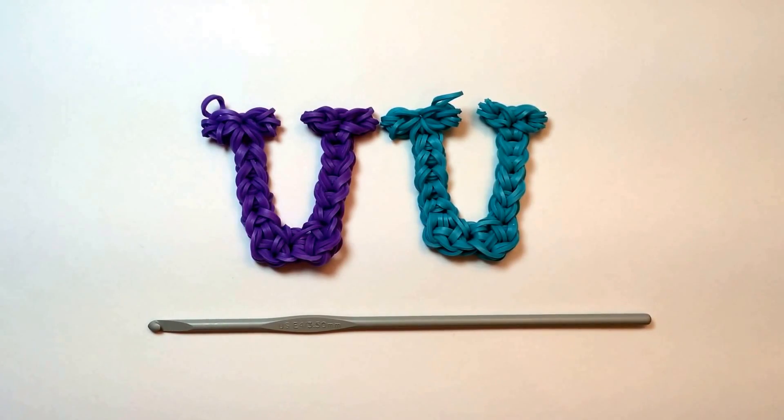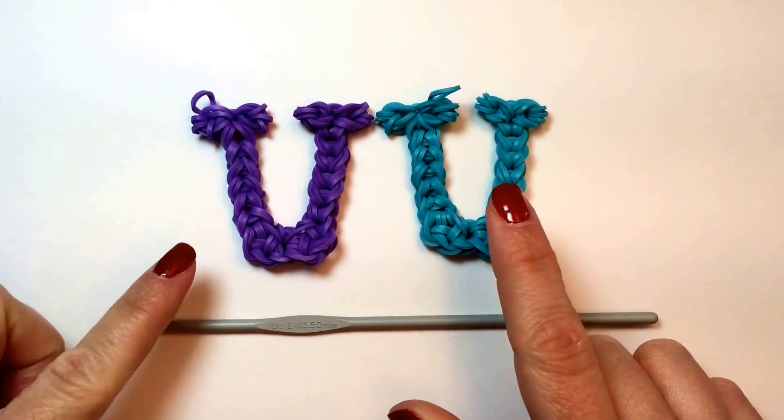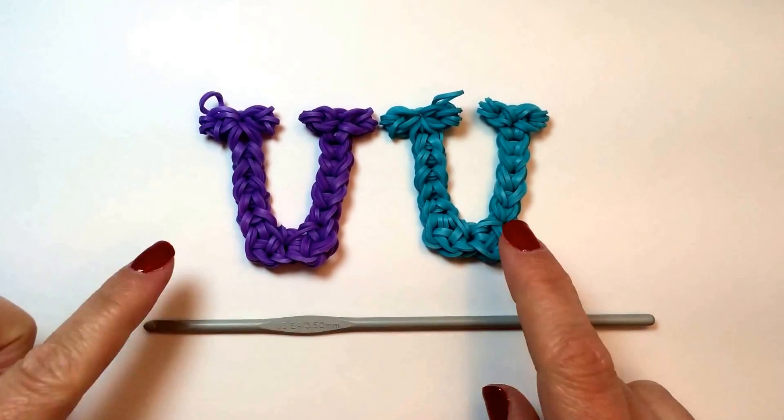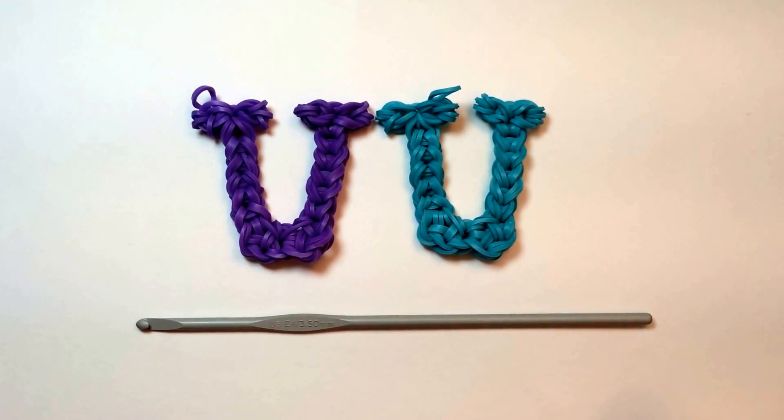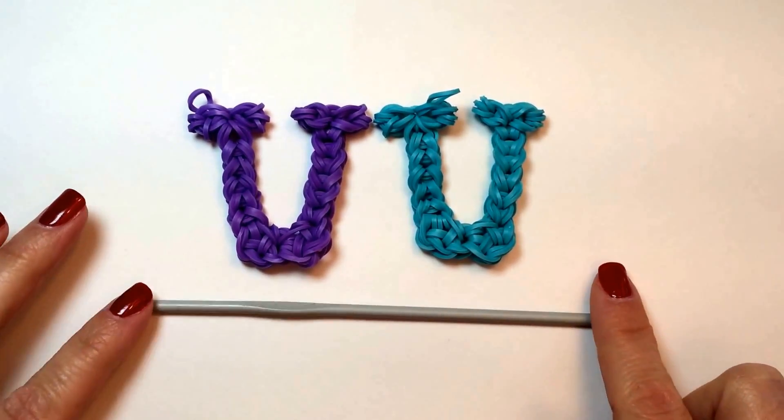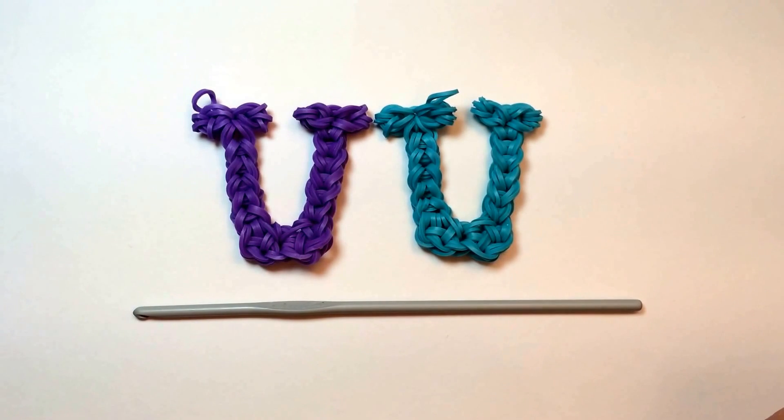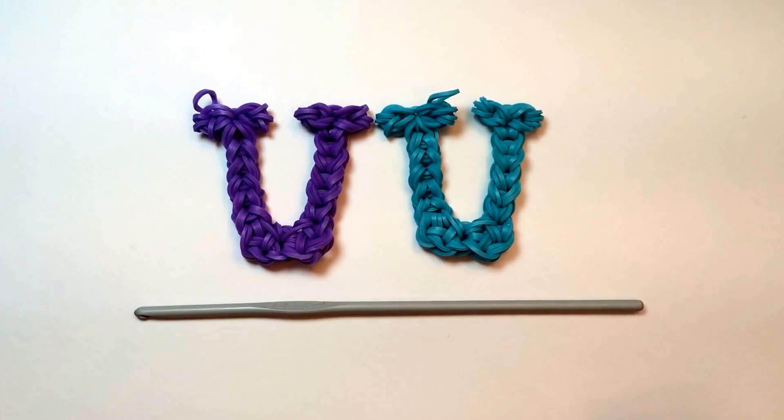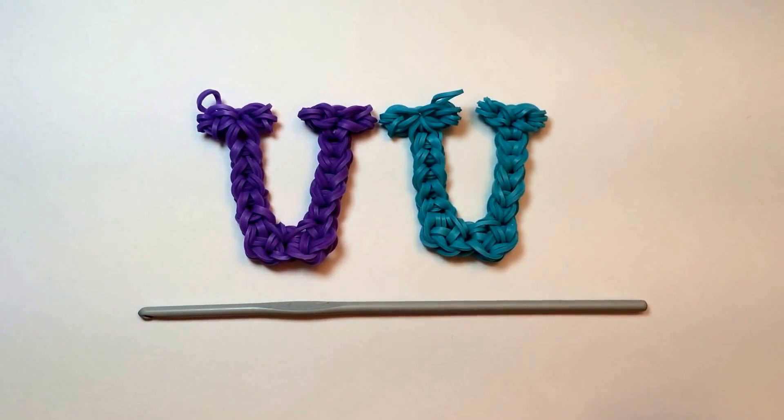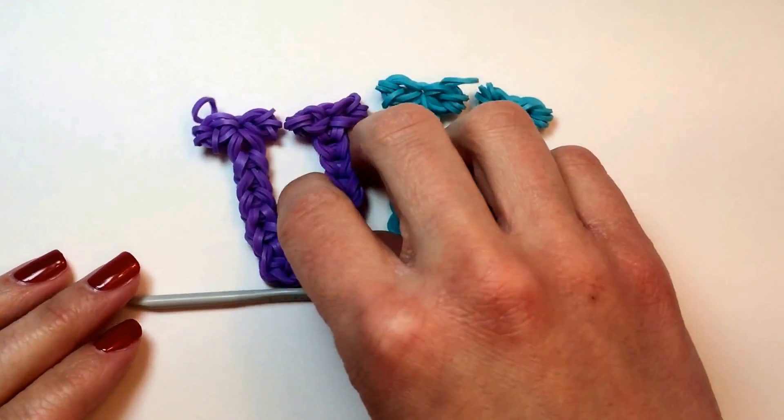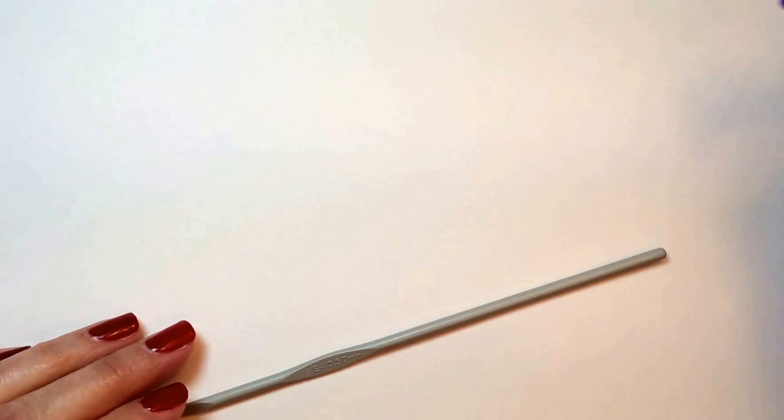Hi, this is Made by Mommy, and today I'm going to show you how to make the letter U using just a crochet hook or the hook that came with your loom kit and approximately 51 rubber bands. You can use one color or as many colors as you'd like. I'll show you the basic shape and then it's up to you to decide how to decorate it.